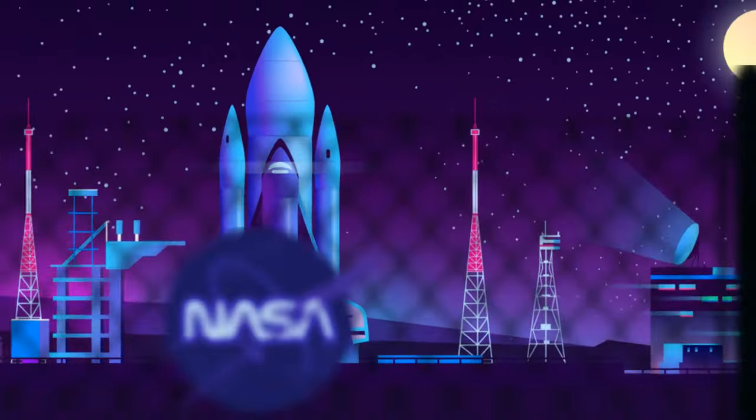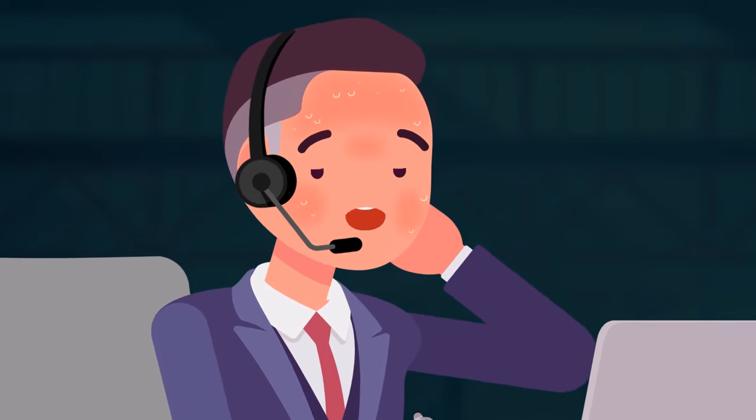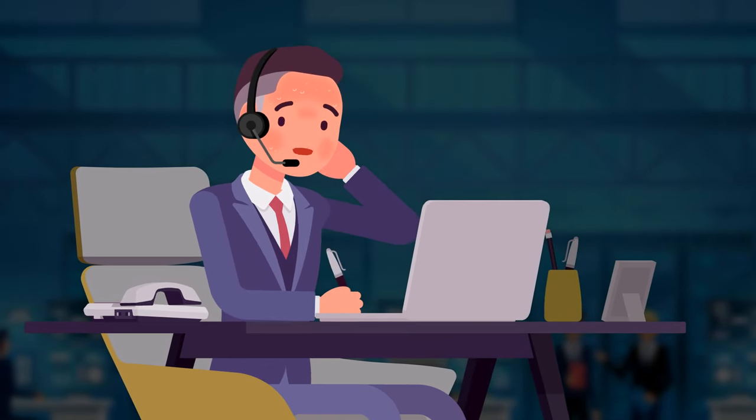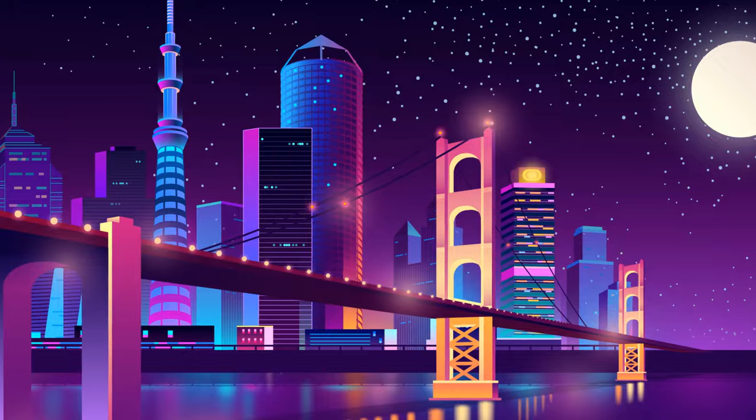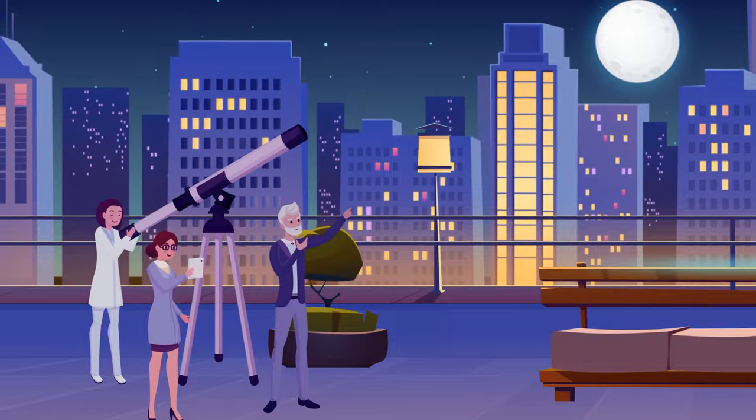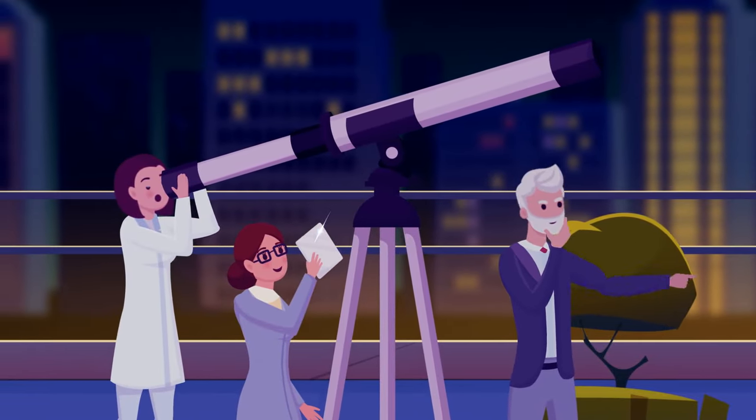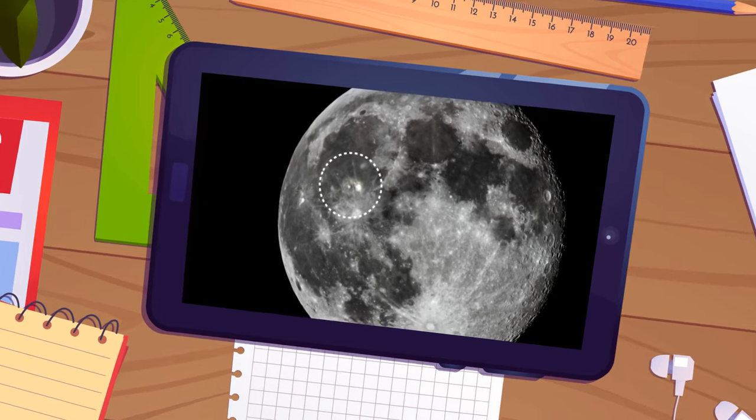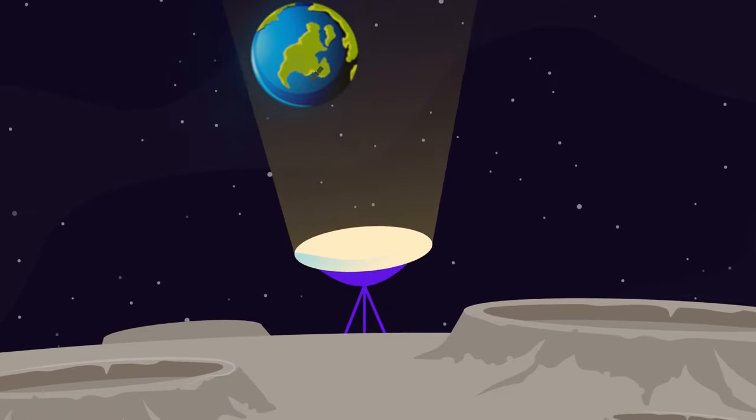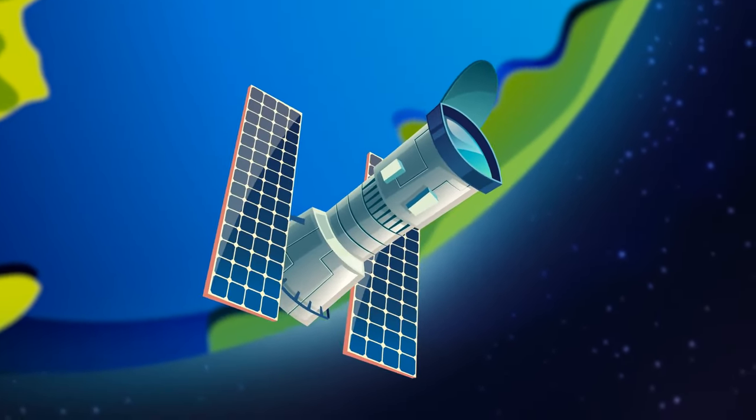Wow, the NASA hotline is ringing off the hook. The call center operator is all sweaty from stress. They barely have time to answer the phone and all the messages they get say the same thing. There's something glowing on the Moon. Indeed, hundreds and thousands of amateur astronomers were watching the Moon that night. And suddenly, there was a bright light on it, as if someone had lit a powerful spotlight on the surface. Scientists immediately began to look for an explanation to this phenomenon.